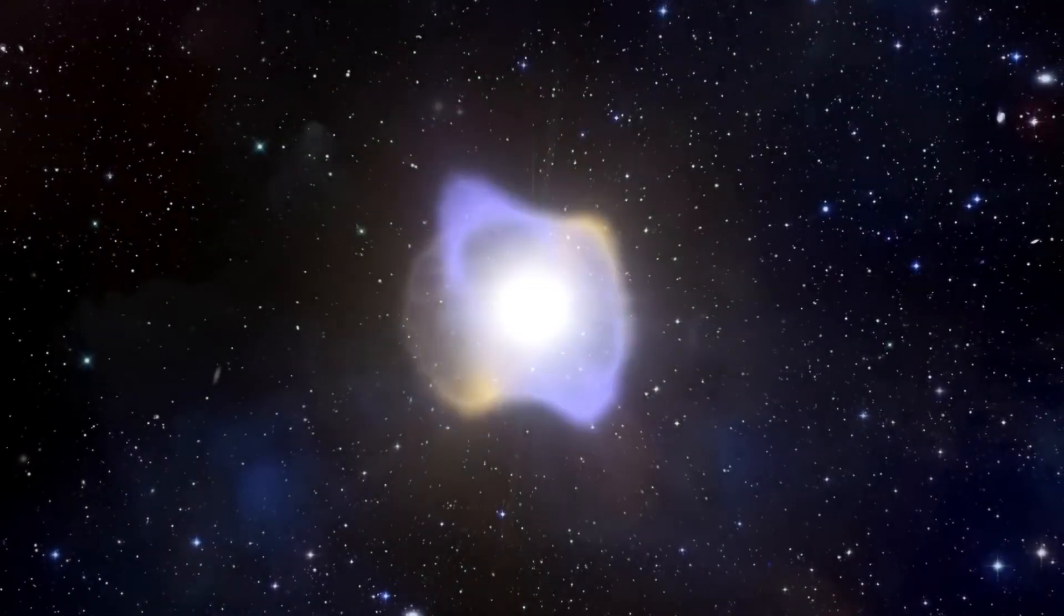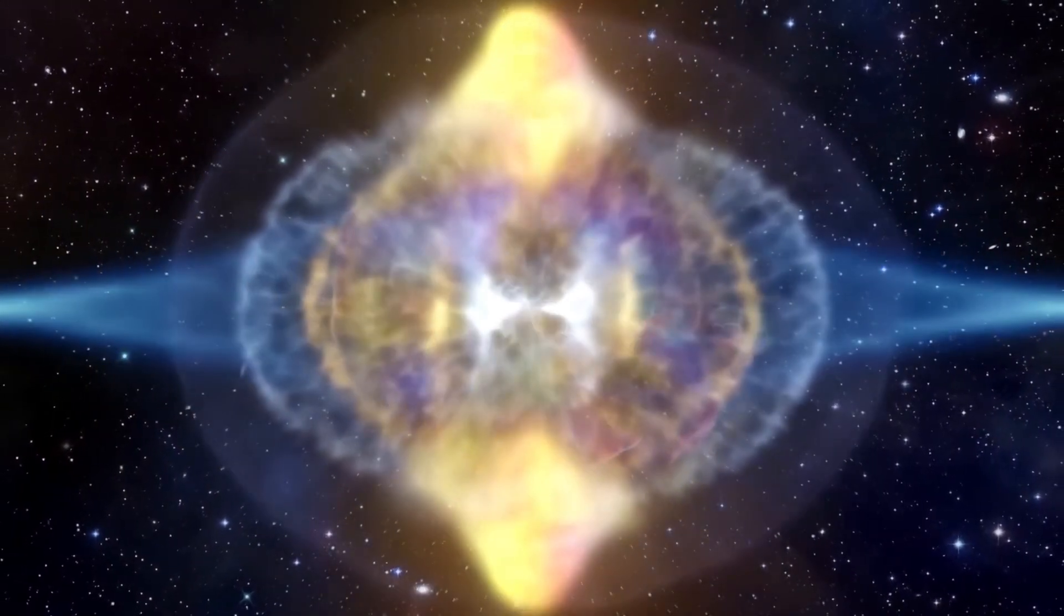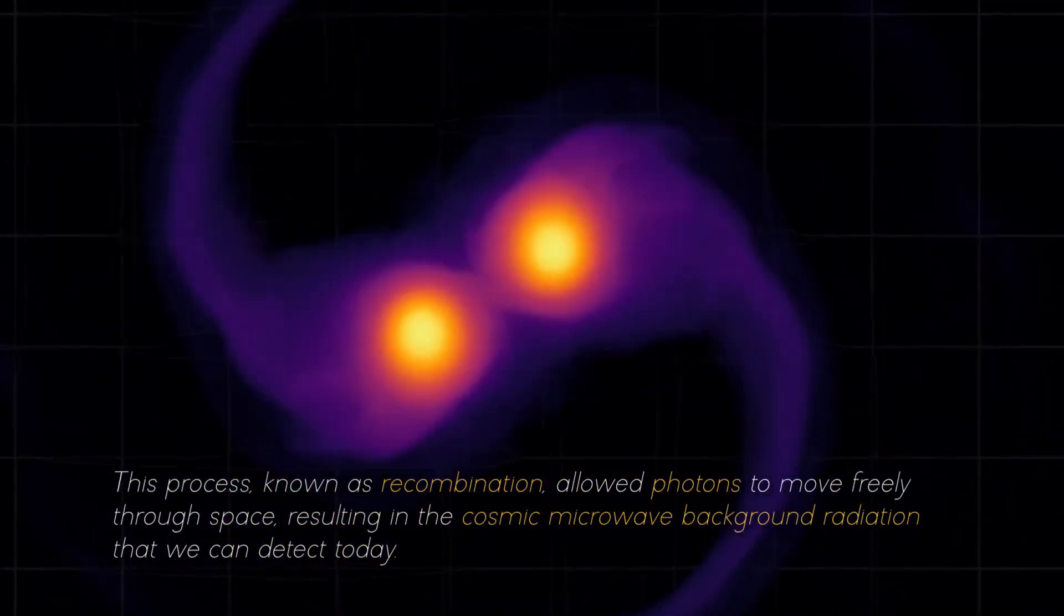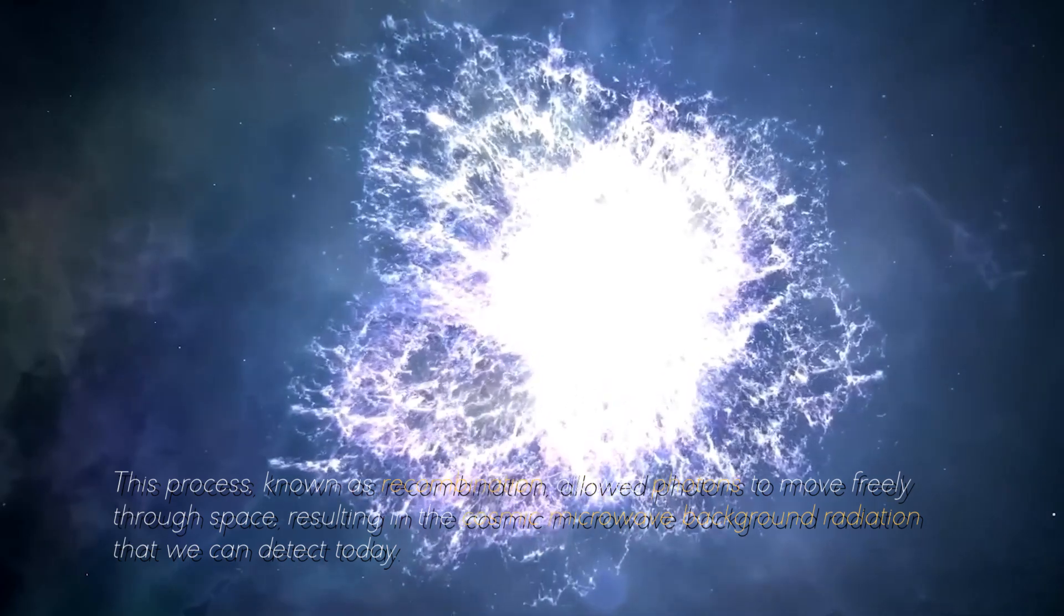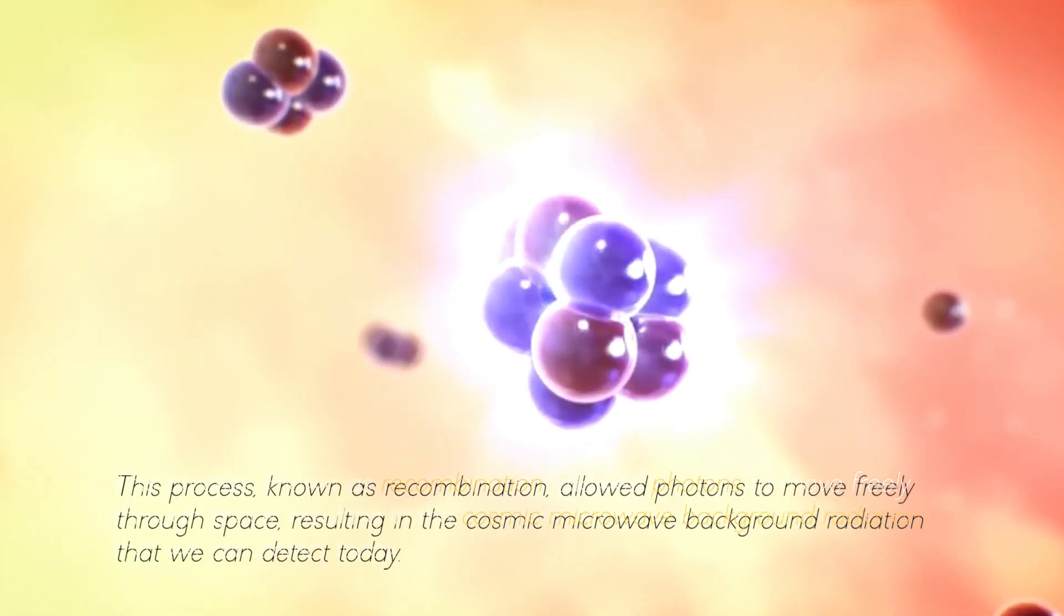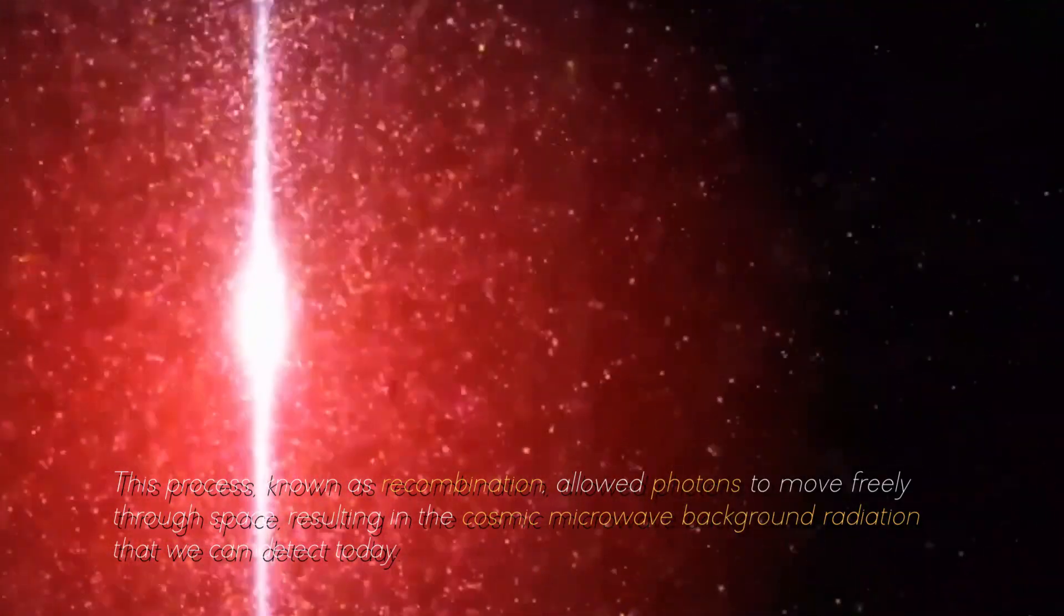As the universe cooled due to its expansion, the temperature dropped enough to allow electrons to bond with protons and form neutral atoms. This process, known as recombination, allowed photons to move freely through space, resulting in the cosmic microwave background radiation that we can detect today.